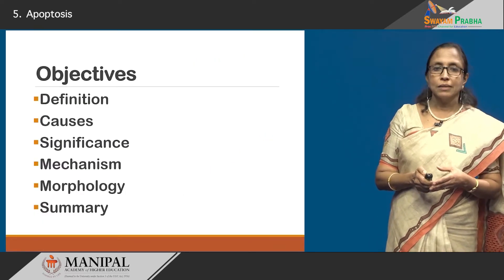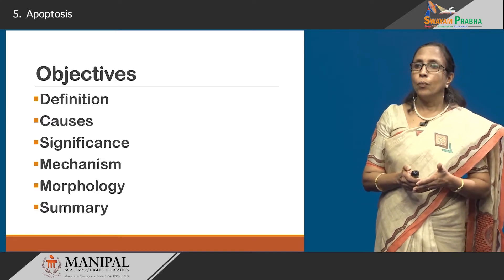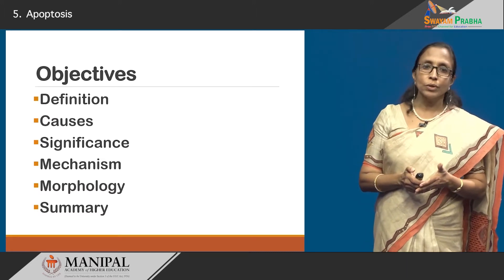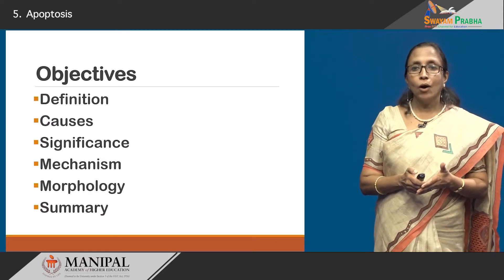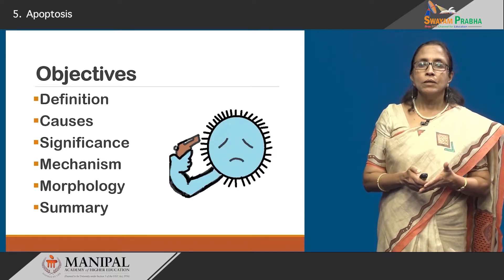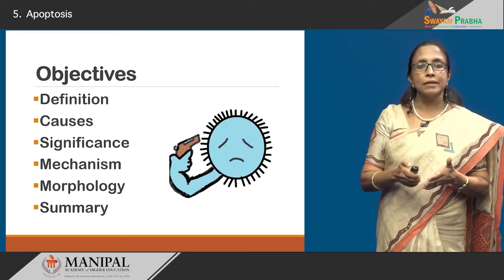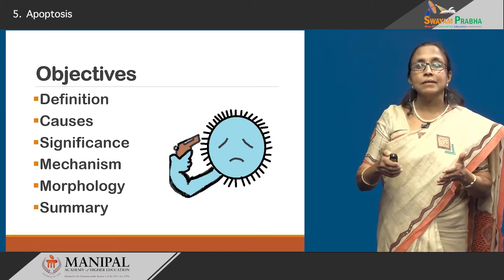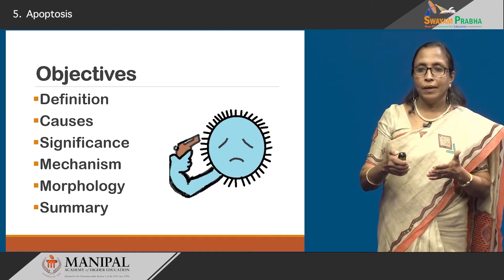Today we will look at this suicidal cell death — what it is, where it occurs, when and why, and how this process happens. We will also look at how cells look in apoptosis. This is a unique type of cell death, and today let us draw the curtains on this orchestrated drama of events.